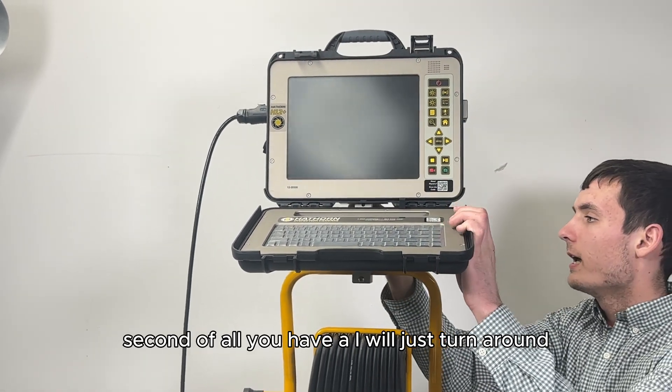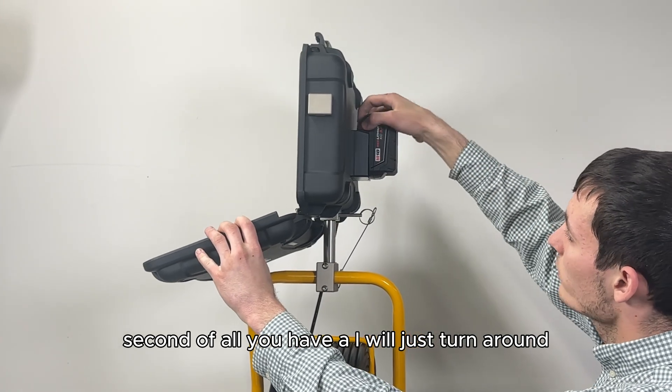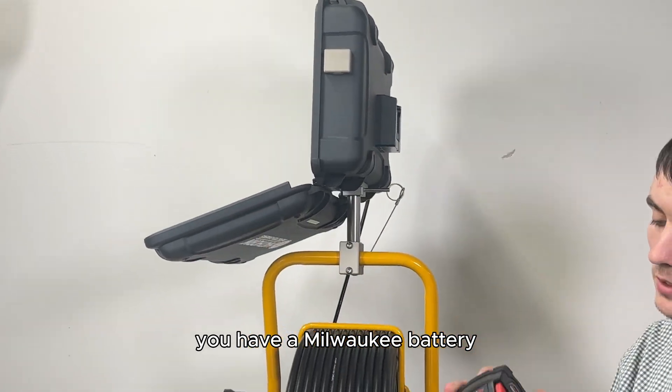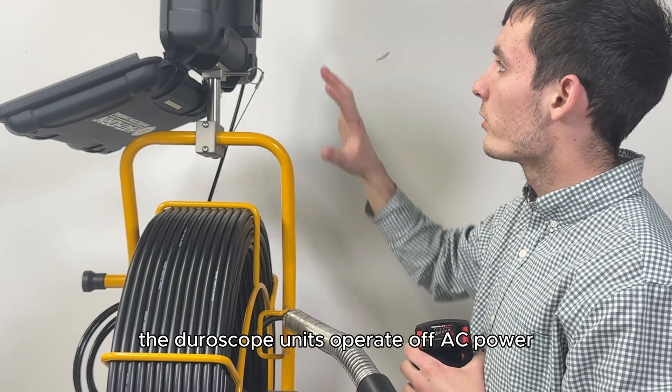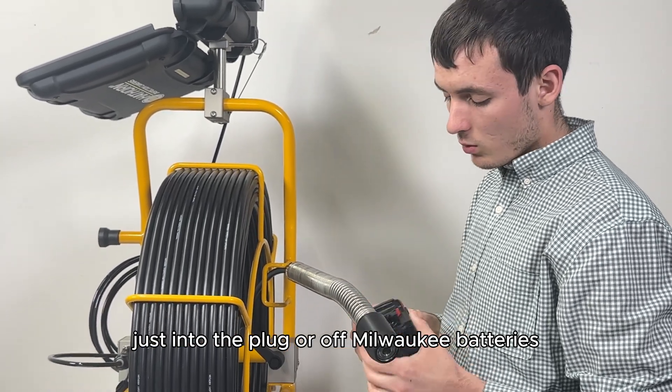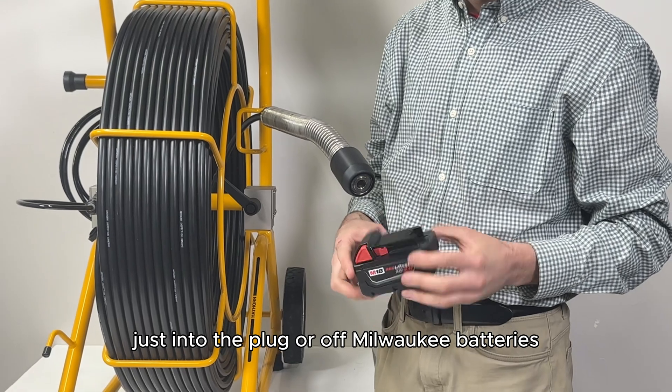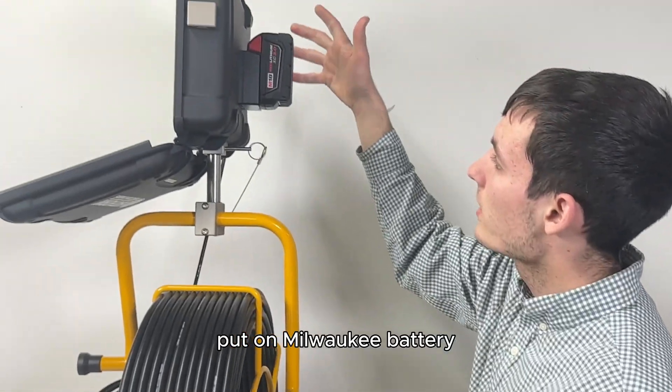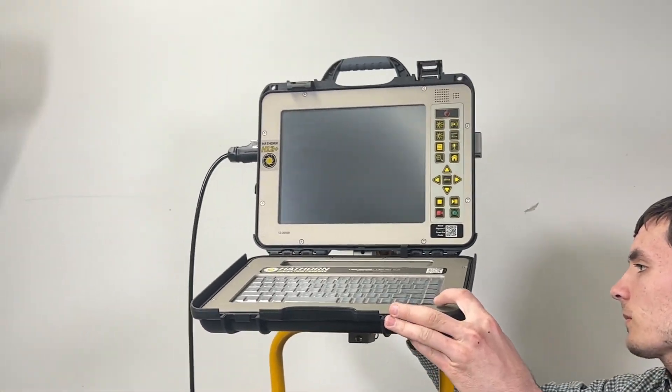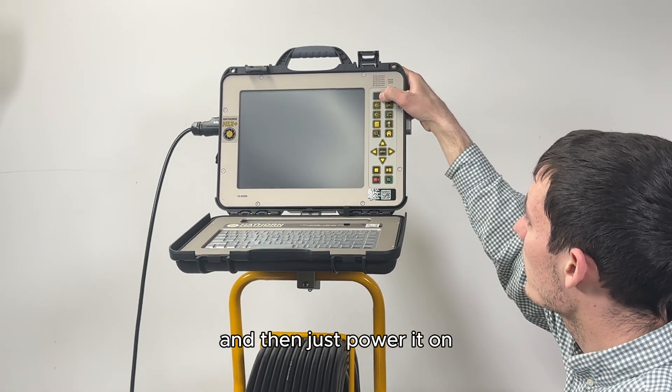You have a Milwaukee battery. The Durascope units operate off AC power plugged into the wall or off Milwaukee batteries. Put on the Milwaukee battery and then just power it on.